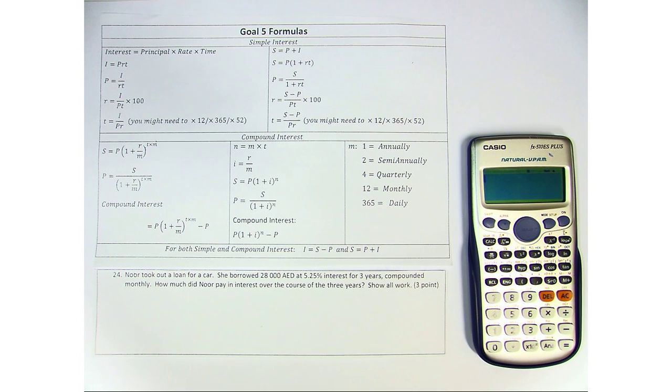Okay, so once again, we're finishing the last problem from Goal 5, question number 24. Noor took out a loan for a car. She borrowed 28,000 dirhams at 5.25% interest for three years, compounded monthly.